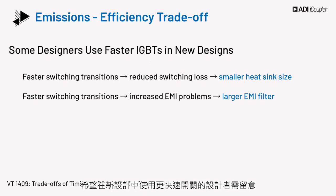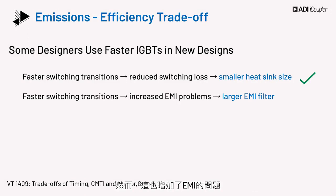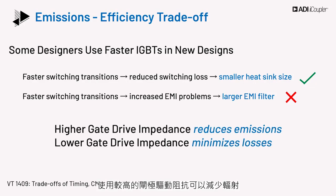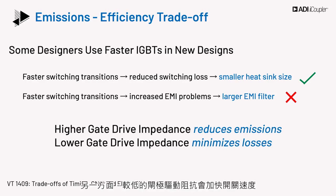Some designers looking to use faster switches in new designs need to consider that faster switching transitions will lead to reduced switching loss, and thus a smaller heat sink is required. However, this also leads to increased EMI problems, and the system will require a larger EMI filter to keep the radiated emissions within limits. Thus, the design trade-off. Using higher gate drive impedance reduces emissions while slowing the device operation. On the other hand, lower gate drive impedance results in faster switching, which minimizes losses.